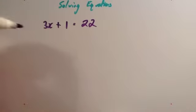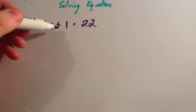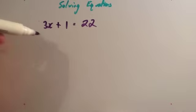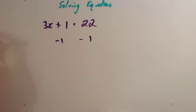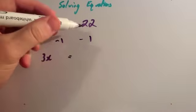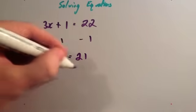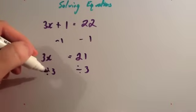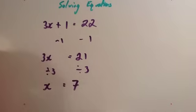This question is slightly more difficult. This time you've got 3x plus 1 equals 22. There are going to be two steps to solving it. First, remember you want to get x on its own on the left-hand side, so you want to get rid of the plus 1 and the multiply by 3. Get rid of the plus 1 first by taking away 1 from both sides. That gets rid of the plus 1, leaving you with 3x on the left. On the right-hand side, 22 take away 1 is 21. Now this is 3 times x equals 21. So divide both sides by 3. 3x divided by 3 is just x, and 21 divided by 3 is 7. So x equals 7.